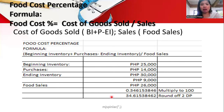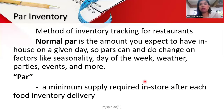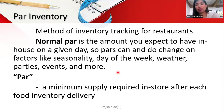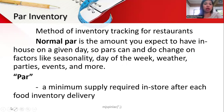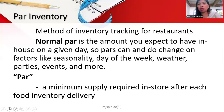The inventory par level is the amount you expect to have on hand on a given day. Par can change based on factors like seasonality, day of the week, weather, parties, and events. The par is also the minimum supply required after each food inventory delivery. Restaurants set their inventory par levels so they know how many products to order, especially during events or emergency situations.